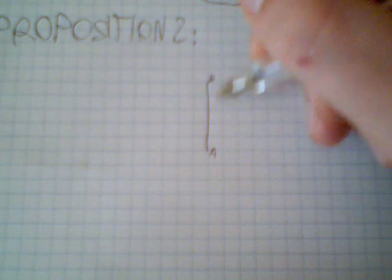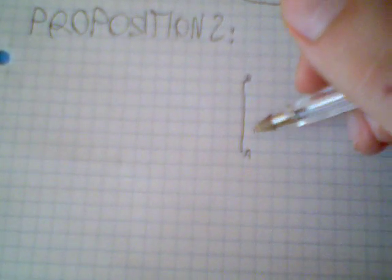Proposition 2 says that if I have a line AB and the point C, I can draw a line from C that is equal to AB.